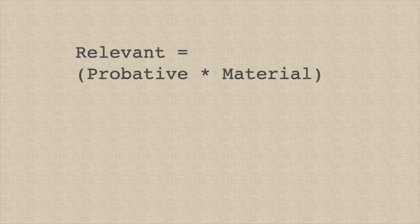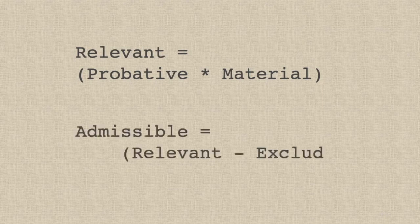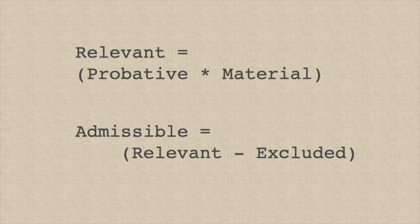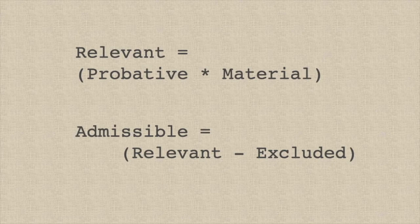We need one more bit of evidence law. All relevant evidence is admissible unless it is excluded. The law of evidence deems some types of evidence better excluded even though they are probative — for example, coerced confessions, many kinds of hearsay testimony, illegally seized evidence, testimony from a spouse or lawyer, and so forth. Not our subject.